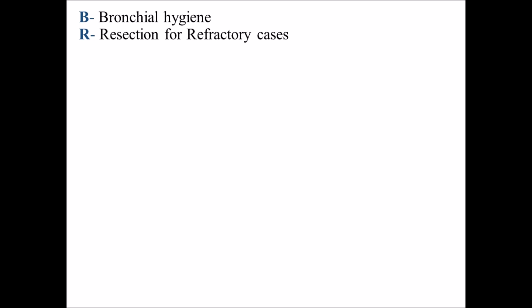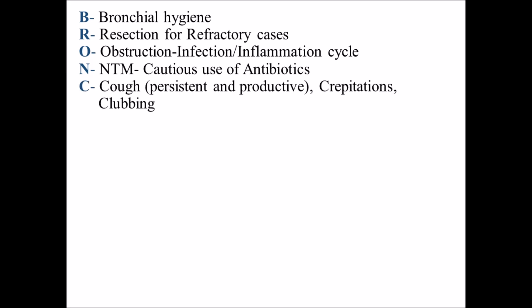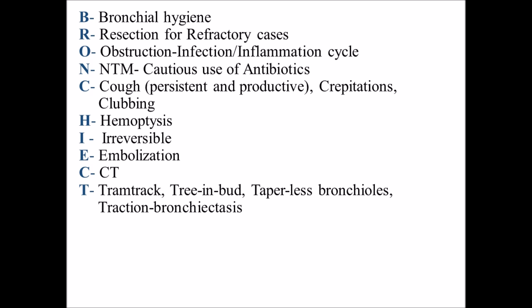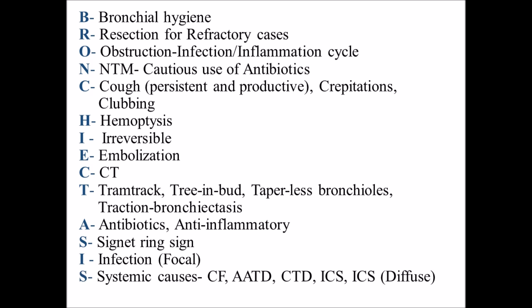The mnemonic BRONCHIECTASIS: B for bronchial hygiene, R for resection for refractory cases, O for obstruction-infection-inflammation cycle, N for non-tuberculous mycobacterium, C for cuff crepitations, H for hemoptysis, I for irreversible condition, E for embolization, C for computerized tomography, T for tram track, tree-in-bud, taperless bronchioles, traction bronchiectasis, A for antibiotics and anti-inflammatory agents, S for signet ring sign, I for infection, S for systemic causes.